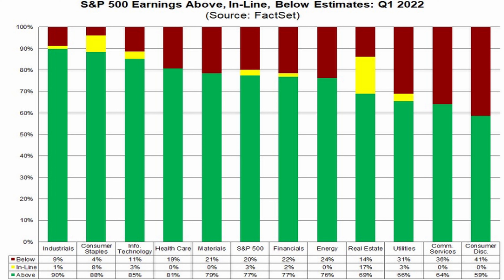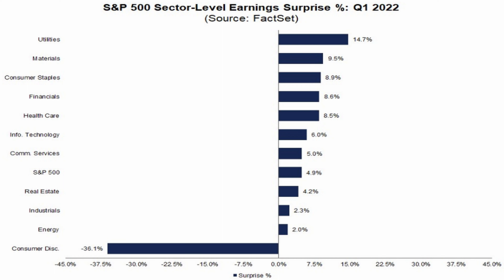About the earnings data in this FactSet report: this first chart shows results at the industry level. The green portion is the percentage of firms within that industry that have earnings higher than Wall Street estimates. The yellow portion is firms with earnings exactly the same as estimates. The red portion is firms with earnings less than estimates. The sum of green, yellow, and red equals 100% for each industry. The chart is organized with industries on the left having the highest percentage of firms beating Wall Street estimates, and on the right the lowest percentage.